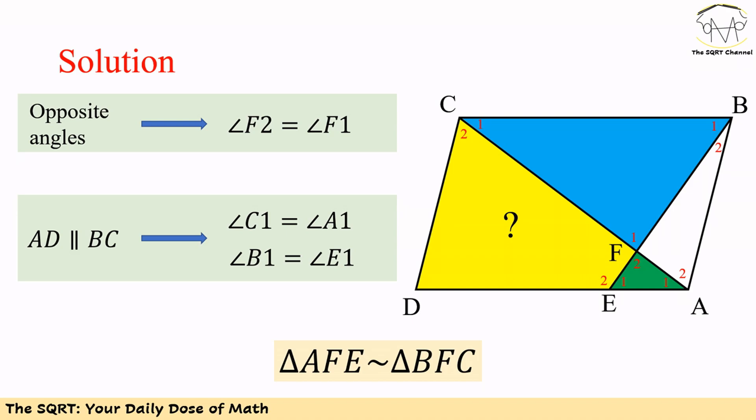To solve this problem we are going to take several steps. First, we are going to show that the green and blue triangles are similar. Then we are going to find the area of the white triangle. After that, we are going to calculate the area of triangle ABC, and finally we are going to subtract the area of the green triangle to find the yellow area. Let's start by showing that the blue and green triangles are similar.